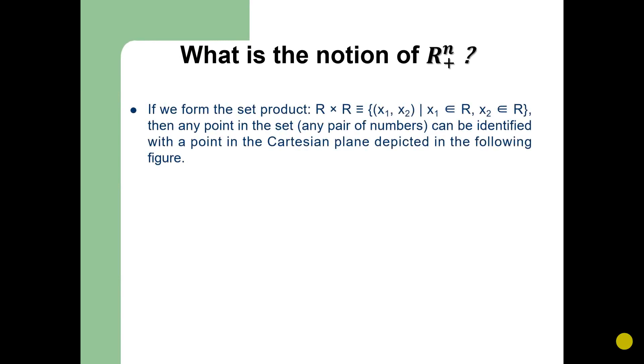If we form the set product R × R, that equals the set of ordered pairs (x₁, x₂) such that x₁ belongs to R and x₂ also belongs to R. Then any point in the set, any pair of numbers, can be identified with a point in the Cartesian plane which is depicted in the following figure.